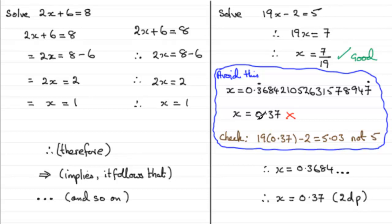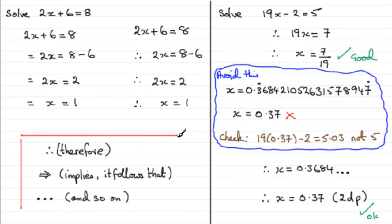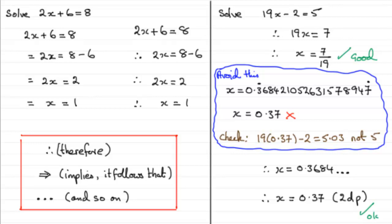So an answer presented like this is going to be okay. But if you want the exact answer, just leave it as a fraction — x equals 7/19. I hope that's given you some idea of how I would encourage you to lay out an equation and the notation we tend to use when dealing with equations. You'll see in all my videos that I'm using this kind of notation — I tend to use 'therefore,' and you'll notice the 'and so on' three dots occurring a lot. Well, that brings us to the end of this tutorial on how I would encourage you to lay out an equation.